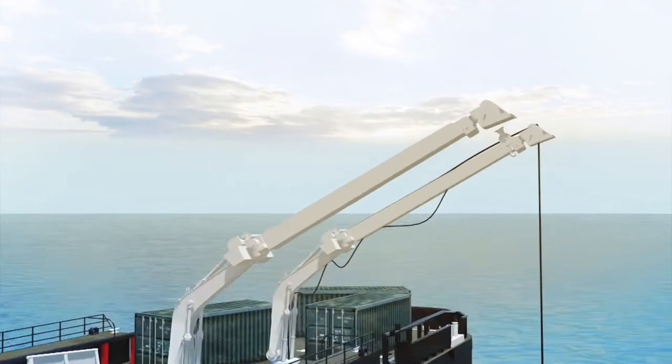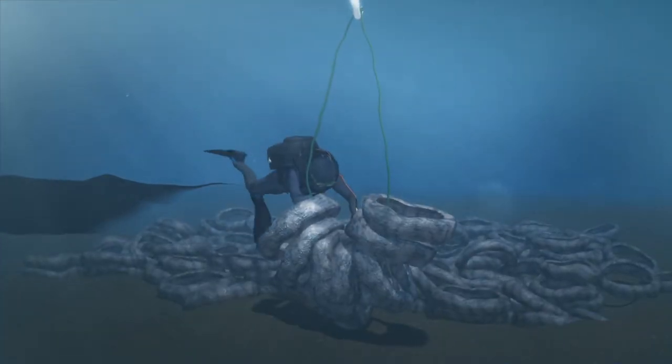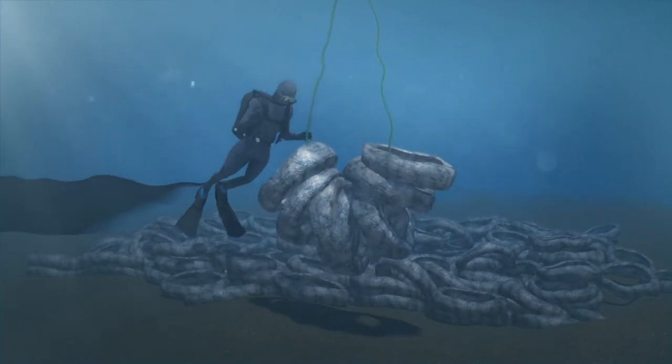France has begun removing 25,000 car tires that were dumped into the Mediterranean in the 1980s off the French coast after they failed to restore marine life and instead began polluting the water.